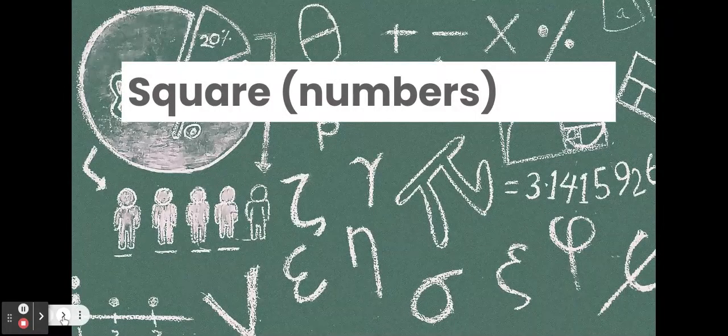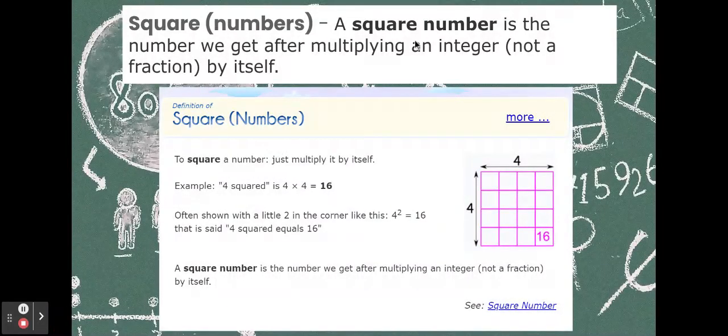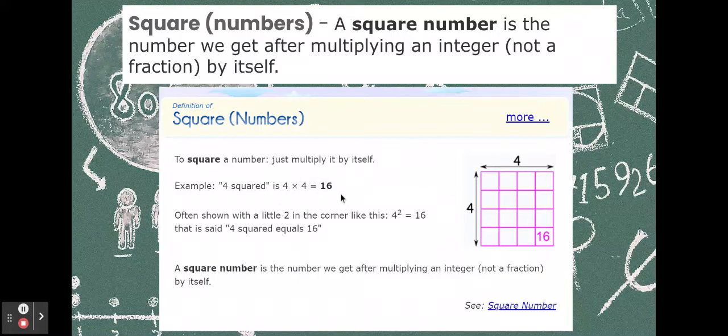Square numbers. I'm sure you've seen this before. If you have 4 rows and 4 columns, it makes a perfect square. Four on each side. So, hence the term square. Four times four. It's what we get when we multiply an integer by itself.